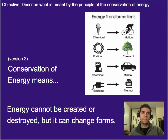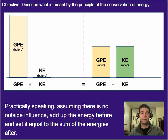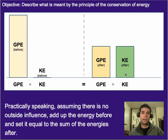You've probably heard the idea that energy can't be created or destroyed — that's the principle of conservation of energy. Practically speaking, if there are no outside influences, meaning no losses of energy to different places, then we can set the sum of the energy before equal to the sum of the energy after. That means we add up the total gravitational potential and kinetic energy, or any other type of energy we're dealing with beforehand, and that'll equal the total amount of energy after.